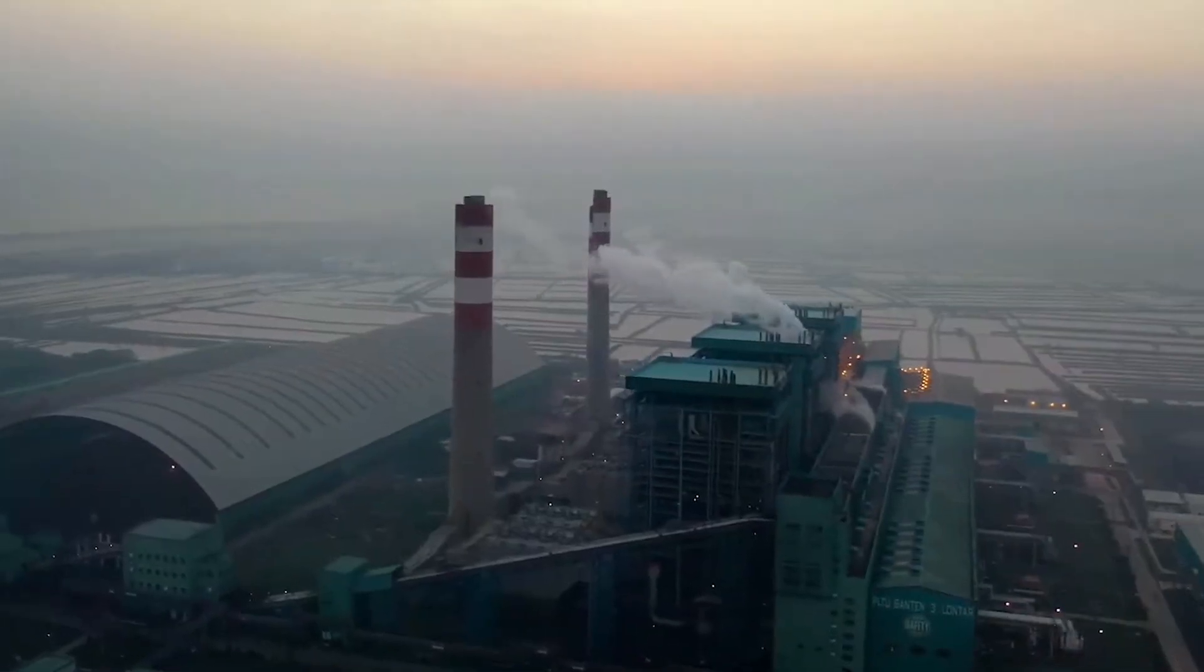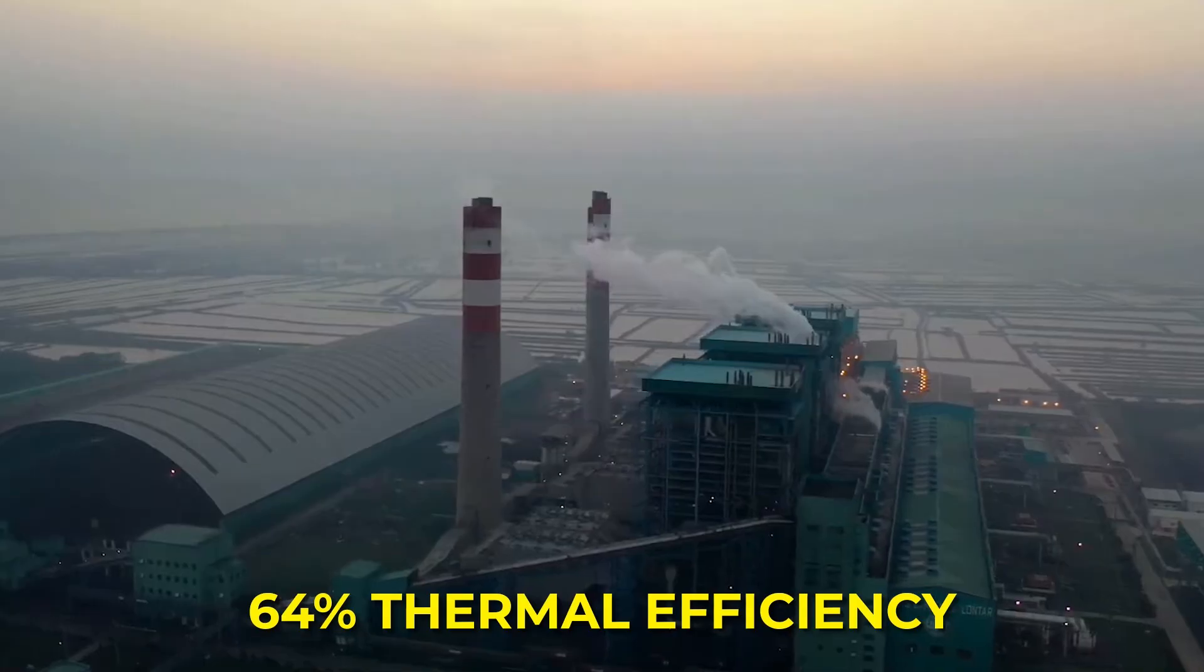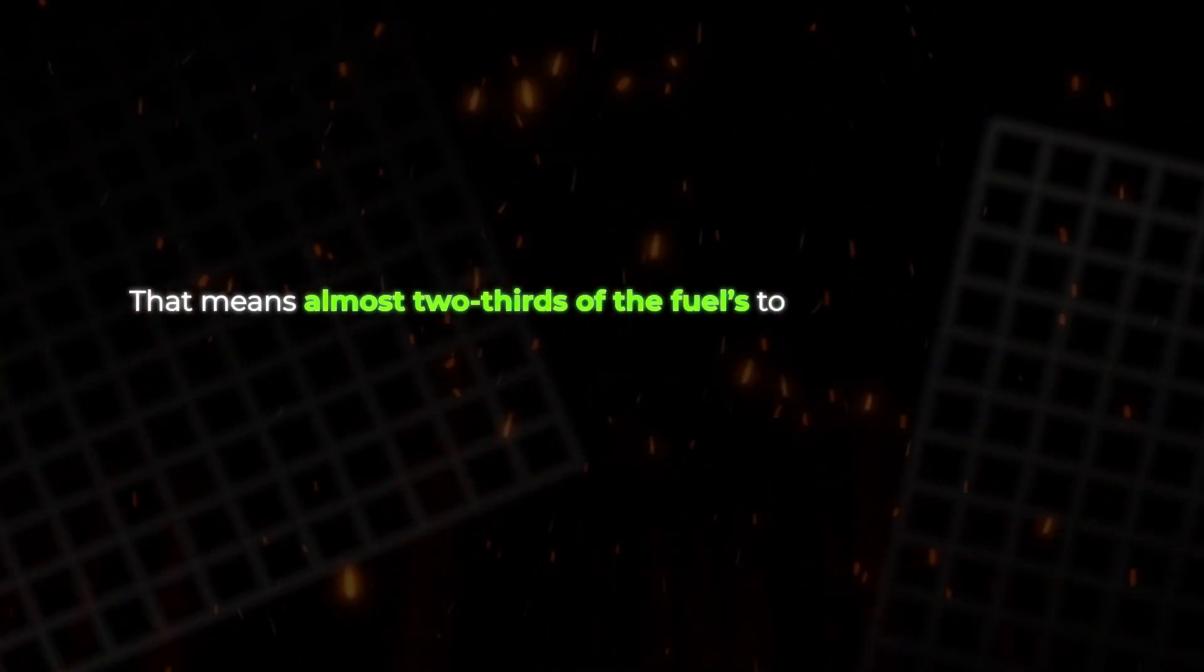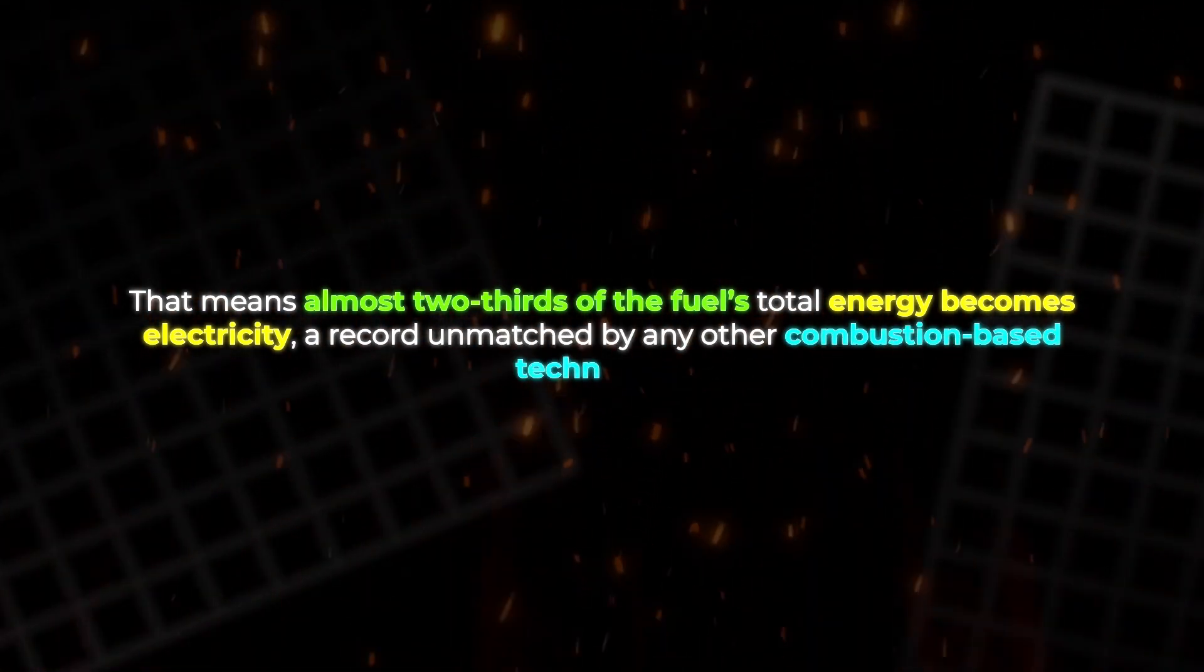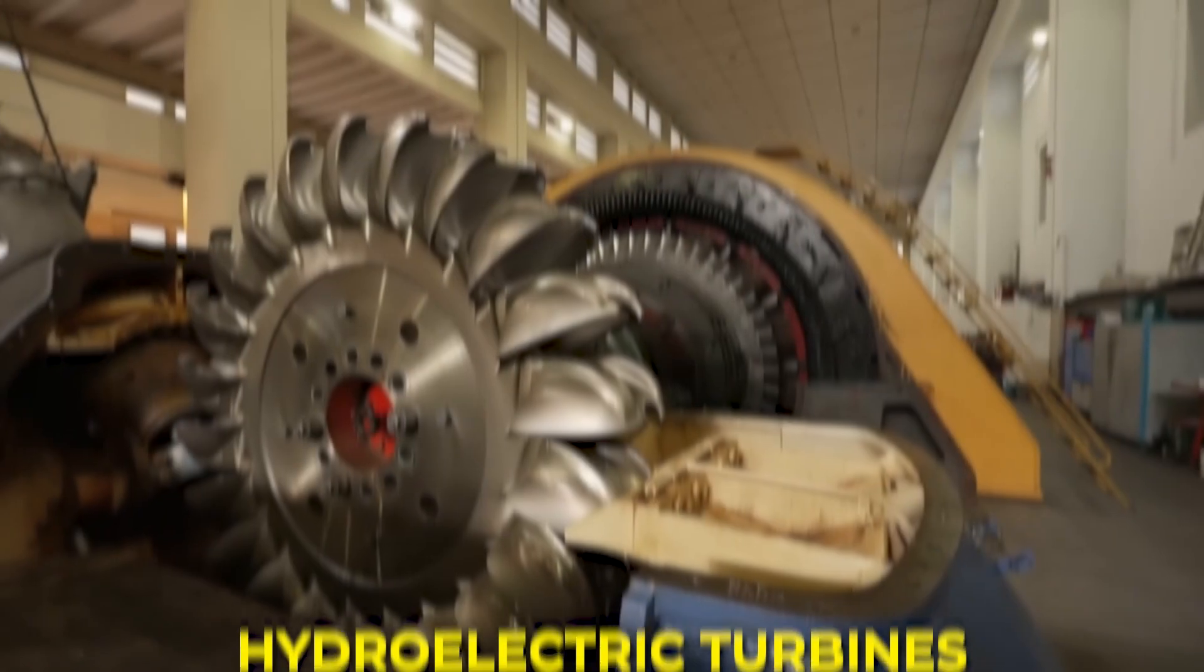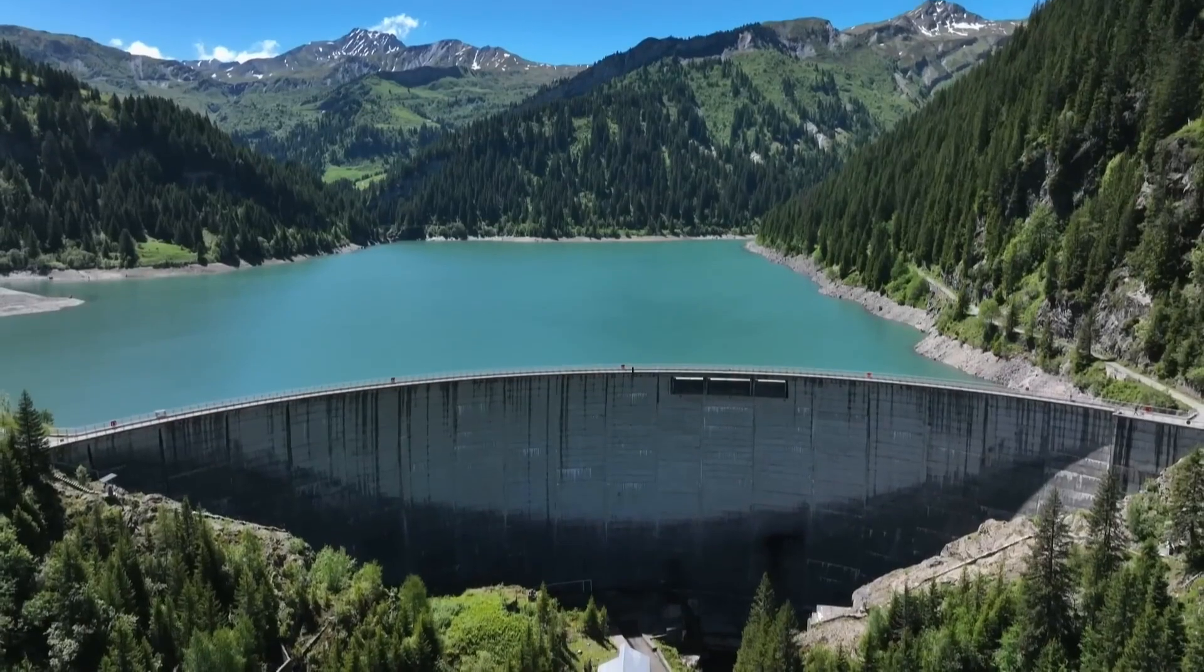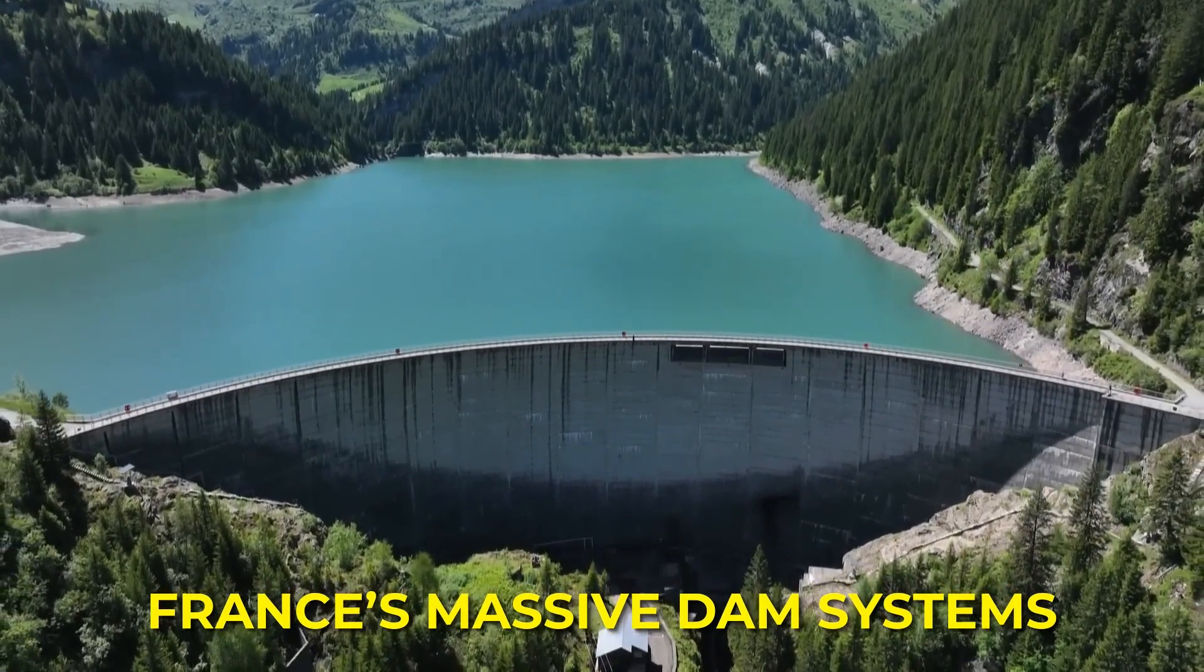This integration pushes overall plant efficiency to astonishing levels. The best modern combined cycle plants can reach around 64% thermal efficiency. That means almost two-thirds of the fuel's total energy becomes electricity, a record unmatched by any other combustion-based technology. Only hydroelectric turbines, like those used in France's massive dam systems, operate at slightly higher efficiencies.